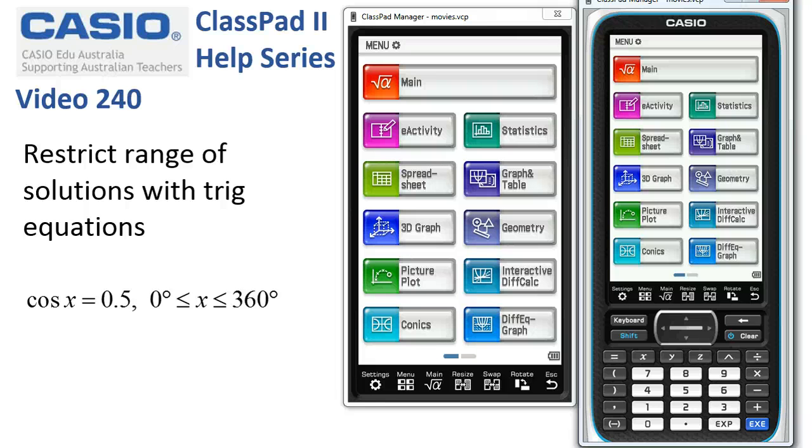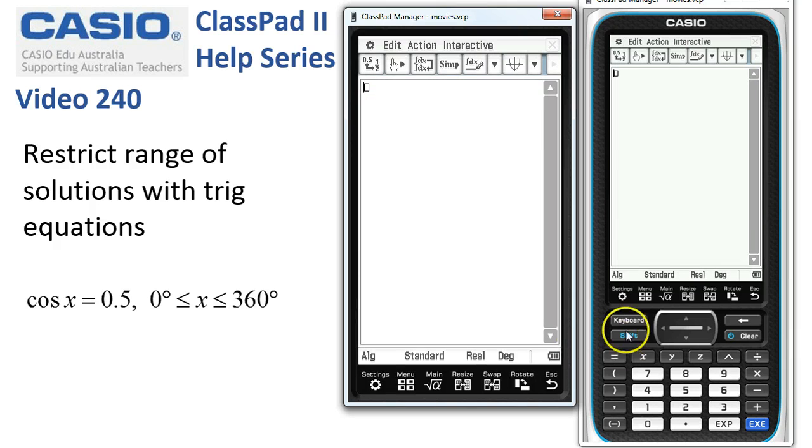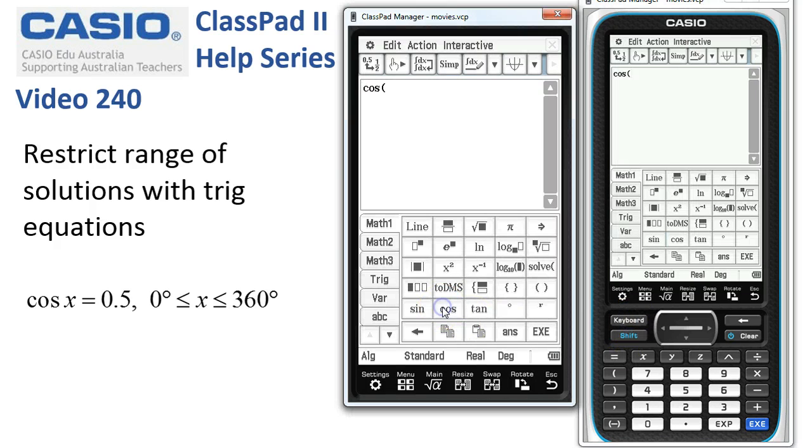Restricting the range of solutions when solving trig equations. We'll start in the main application and enter our equation: cos(x) equals 0.5, then tap execute.